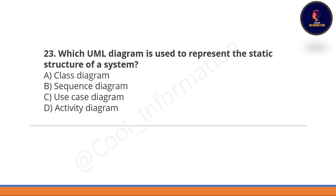Next question: which UML diagram is used to represent the static structure of a system? A class diagram is used for that. Option A is correct. This was all about Unit Number 3. Make sure to watch the last video as well, where previous year MCQs will be discussed. Thank you so much for watching.